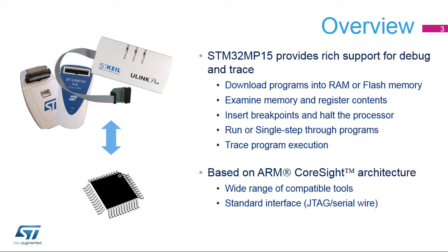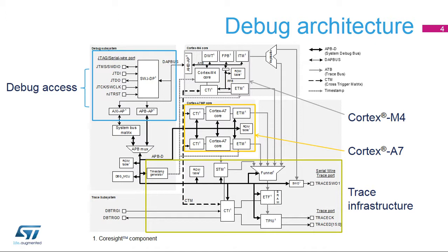The debug and trace infrastructure uses the ARM CoreSight standard, well supported by most tool providers. It is composed of four distinct functional domains. Debug access infrastructure includes the debug port, SWJDP, and access ports (APs), which allow access by an external debugger to the target's trace and debug features. Trace infrastructure includes the serial (SWO) and parallel (TPIU) trace ports, the trace FIFO (ETF) used for smoothing the trace flow, and the trace funnels, which combine the trace from each source into a single flow. There is also a system trace module (STM), which allows software-generated debug information, as well as hardware events, to be traced.